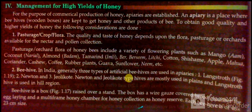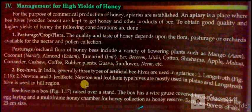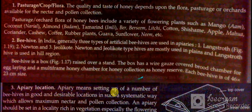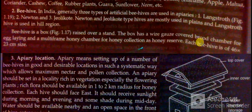Beehive: In India, generally three types of artificial beehives are used in apiaries — Langstroth, Newton, and Dadant type. Newton and Dadant type hives are mostly used in frames, and the Langstroth hive is used in hill-area beekeeping. A beehive is a box raised over a stand. The box has a wire-gauge brood chamber for egg-laying.